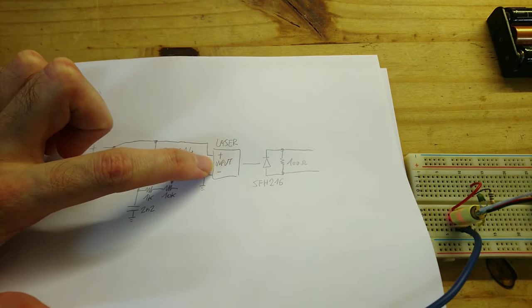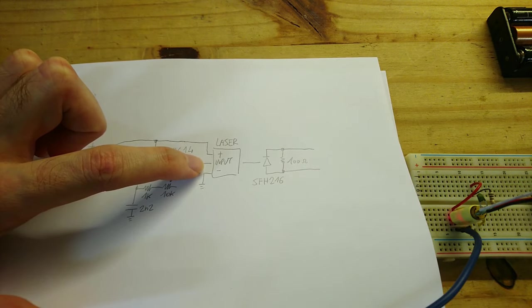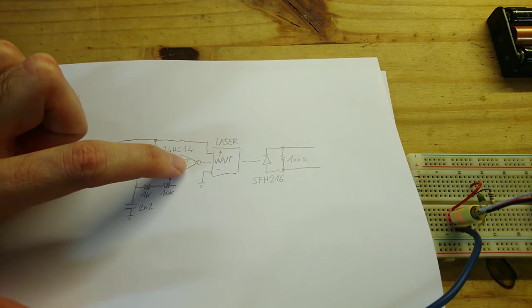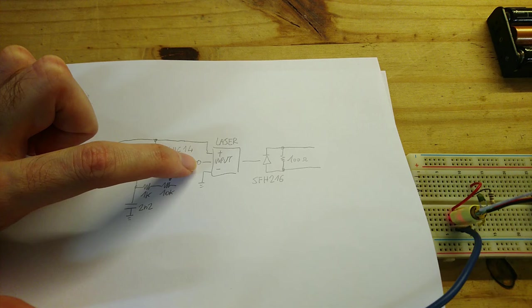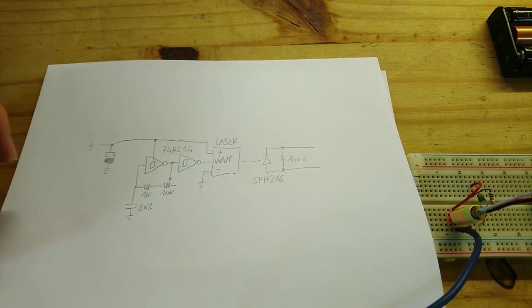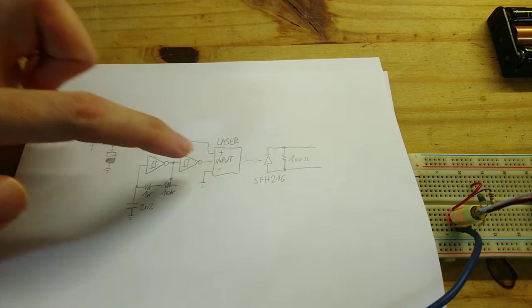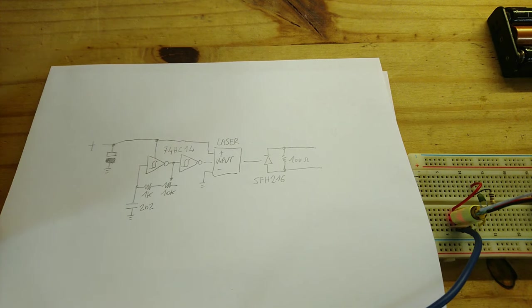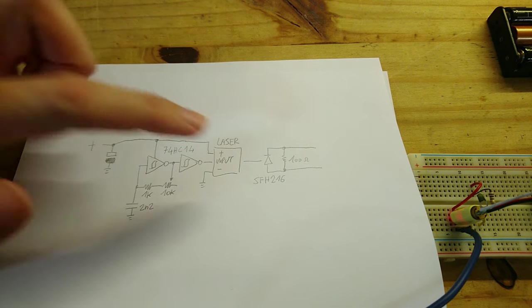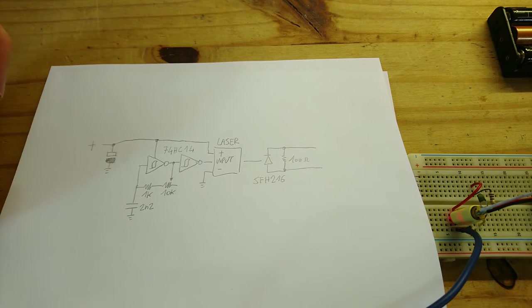This time we have modified the laser diode with an actual input in order to be able to modulate it. Digital modulation only turning it on and off. At the other side we have an SFH-216 photodiode with a 100-ohm resistor in parallel connected to the oscilloscope in order to see the result of the modulation.